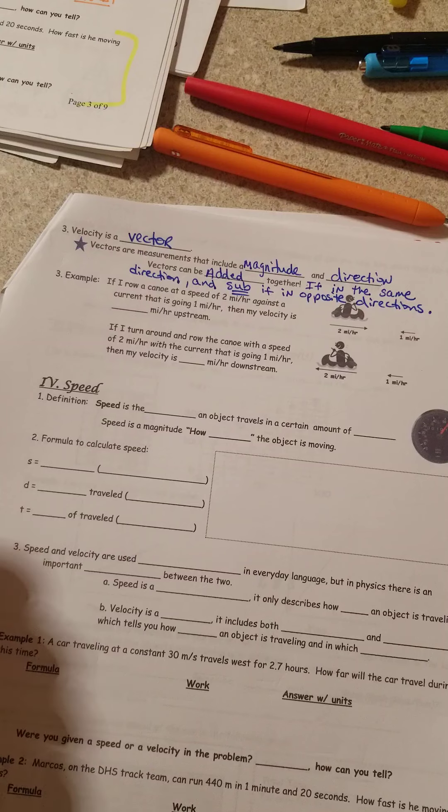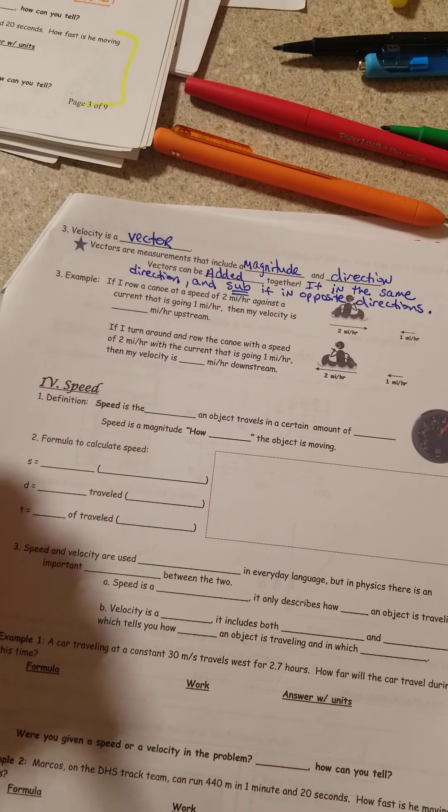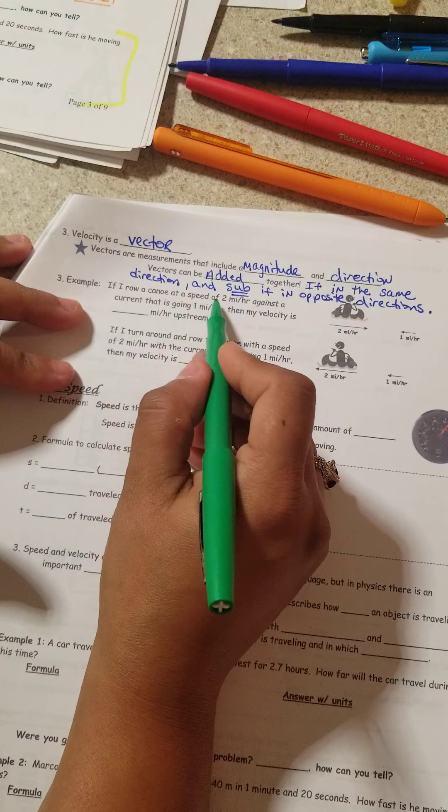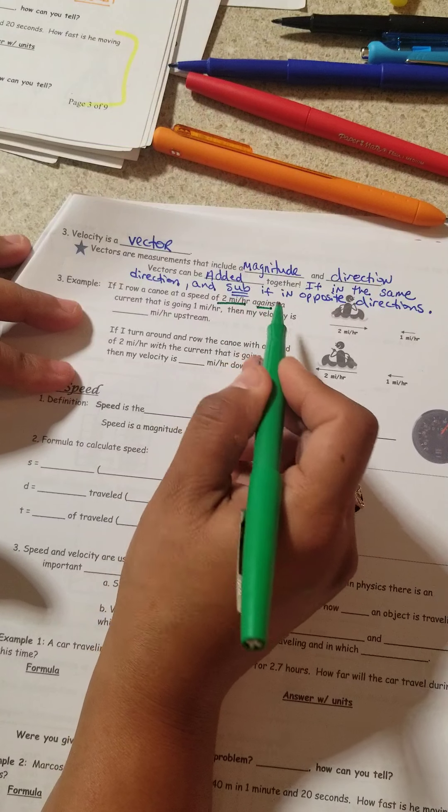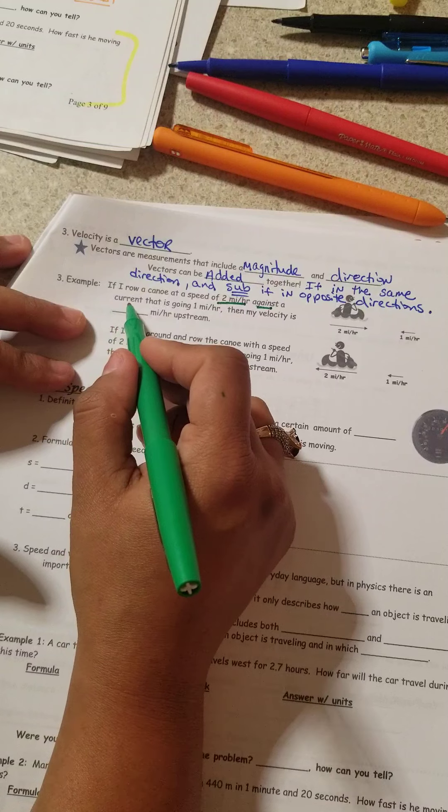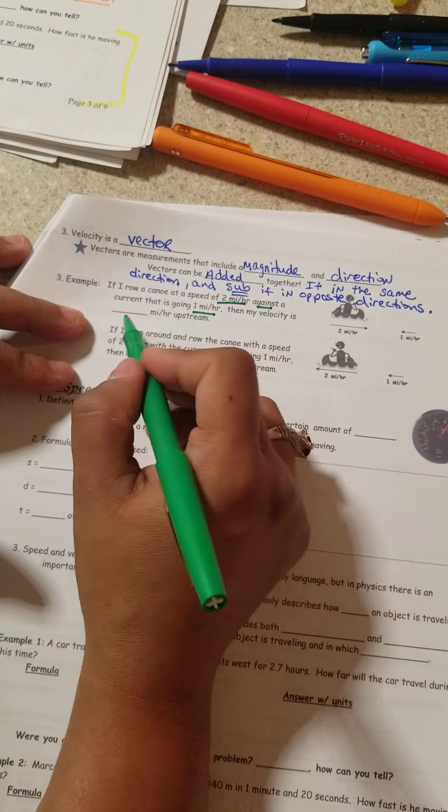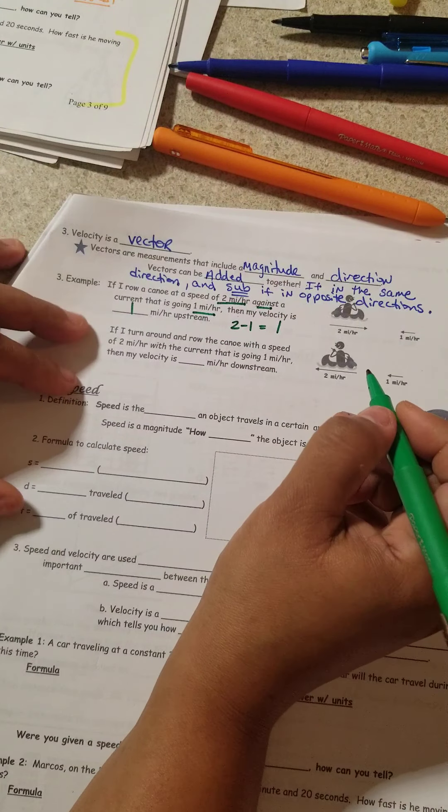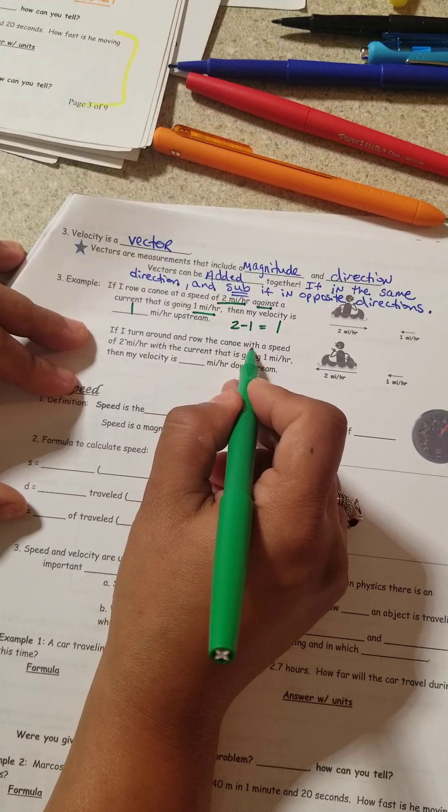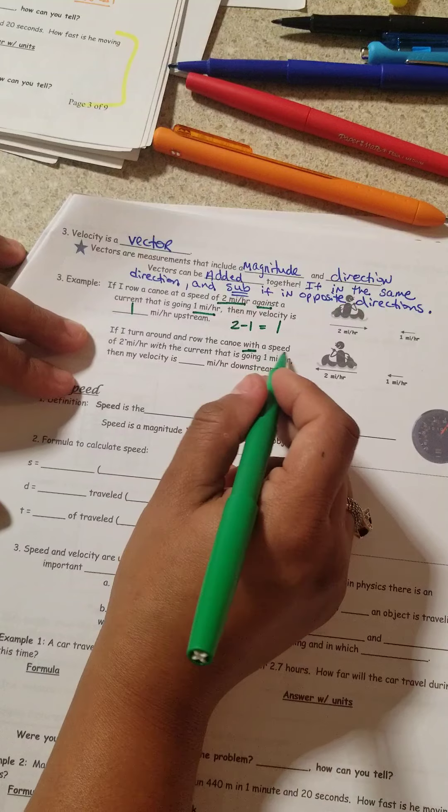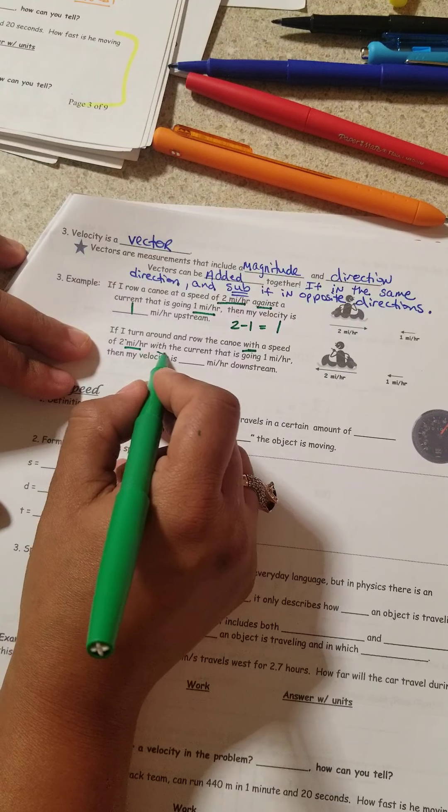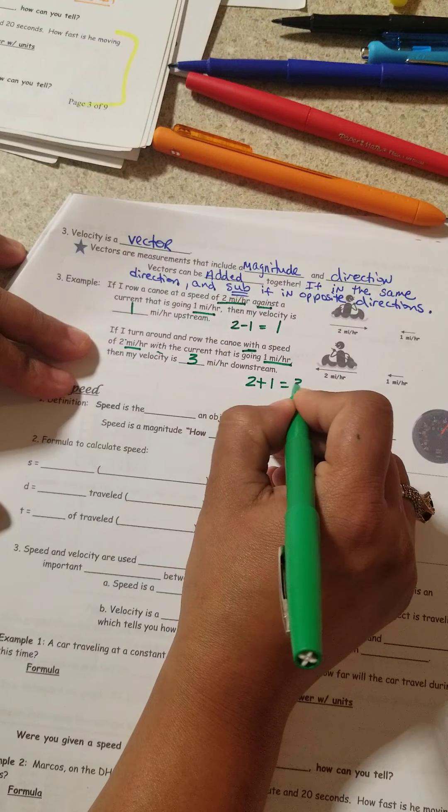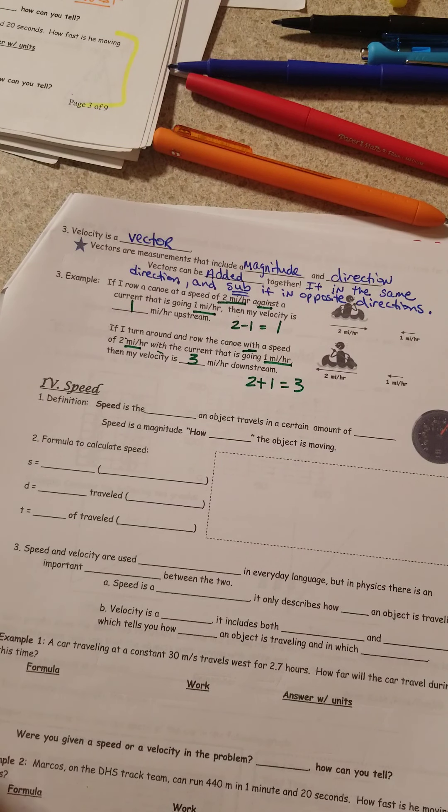If they are up and to the right, now we're going to Pythagorean or SOHCAHTOA it. But we're not there yet. We're still in the basic physics. So for an example, if I row a canoe at the speed of 2 miles an hour against, what does that word against mean? Opposite. If I row a current that is going 1 mile an hour, then my velocity is going to be 2 take away 1 equals 1 mile an hour upstream. If I turn around and row the canoe with, what does that word mean? Same direction. A speed of 2 miles an hour with the current that is going 1 mile an hour, 2 plus 1 equals 3 miles an hour downstream. So pretty easy as that.